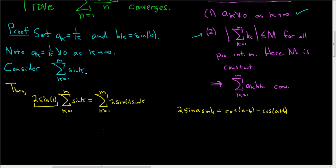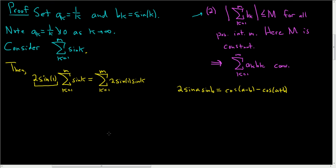Now we're going to go ahead and use our trig identity. This is equal to the finite sum as k runs from 1 to m, where a is 1 and b is k. So this becomes cos(1 − k) − cos(1 + k).